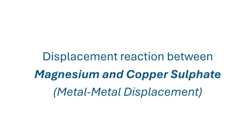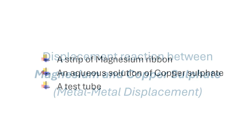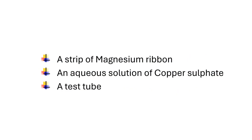Yet another common example of a metal-metal displacement reaction is the displacement of copper from its solution by magnesium metal. To perform this experiment you'll need the following: a strip of magnesium metal, an aqueous solution of copper sulfate, and a test tube.